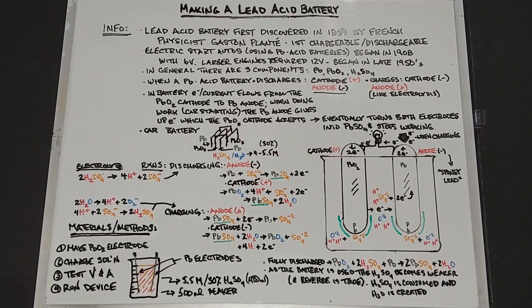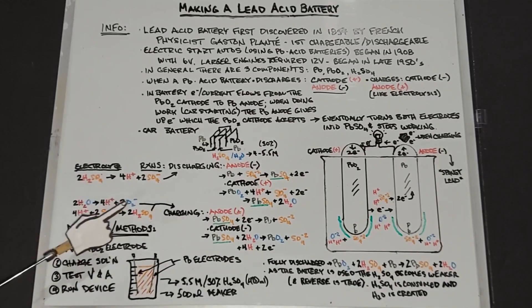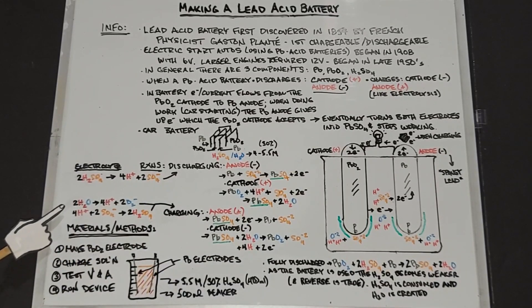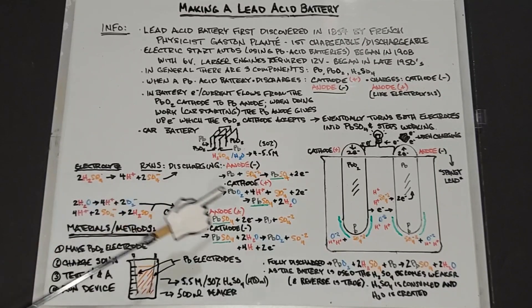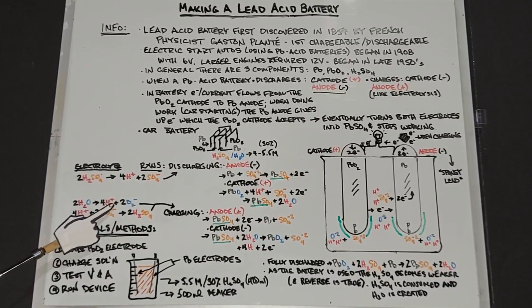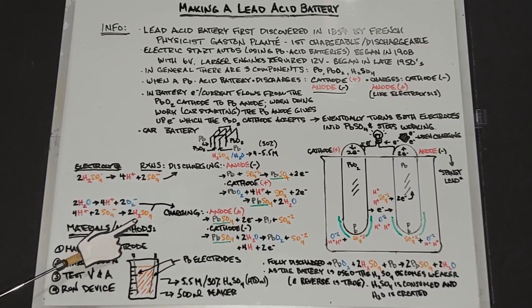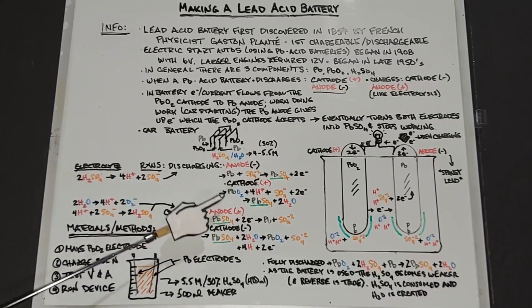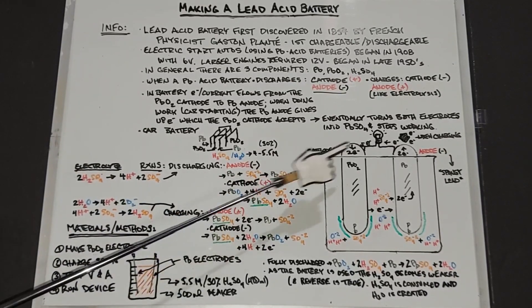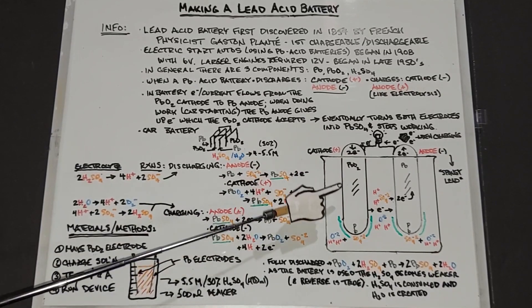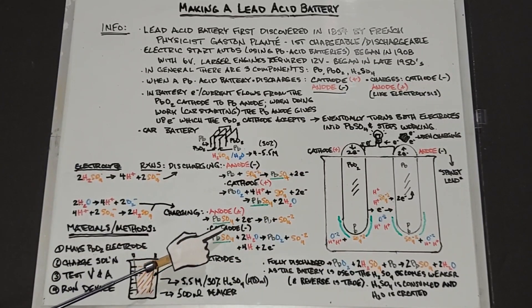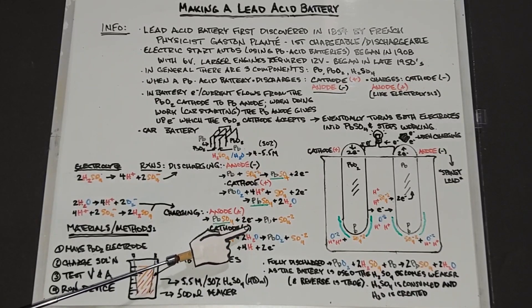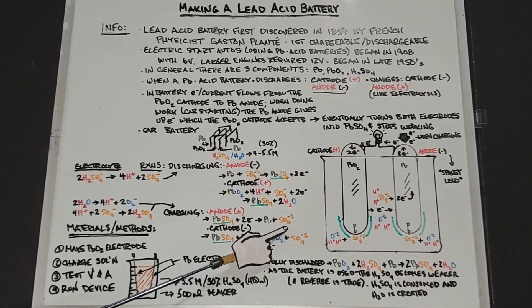Now when you charge the battery, there's a whole different set of reactions occurring. We're charging our battery, we have the two waters which break down into four hydrogens and two O2 minuses. Those four hydrogens will then work with two sulfate ions that form sulfuric acid, so you're reversing in the electrolyte. The lead sulfate plus two electrons which are coming from charging it will yield lead plus the sulfate ion.